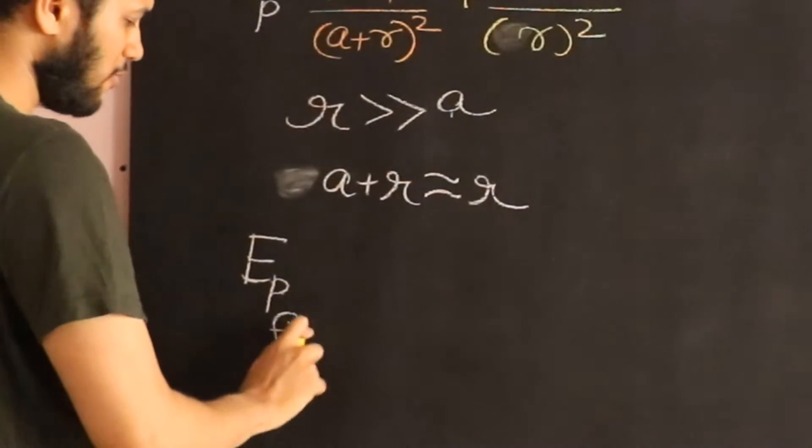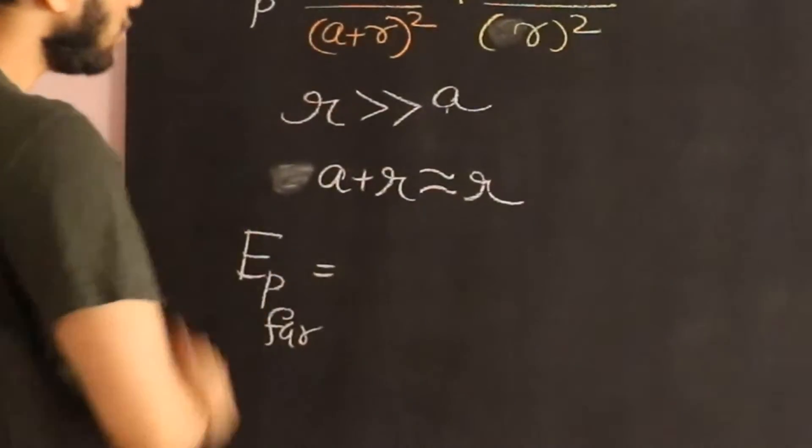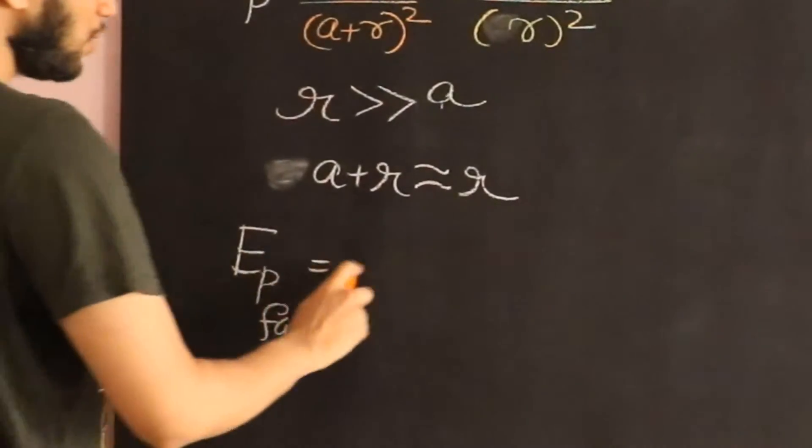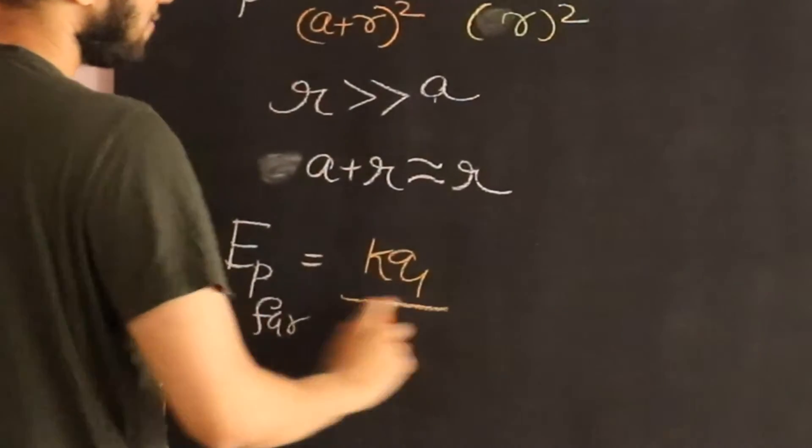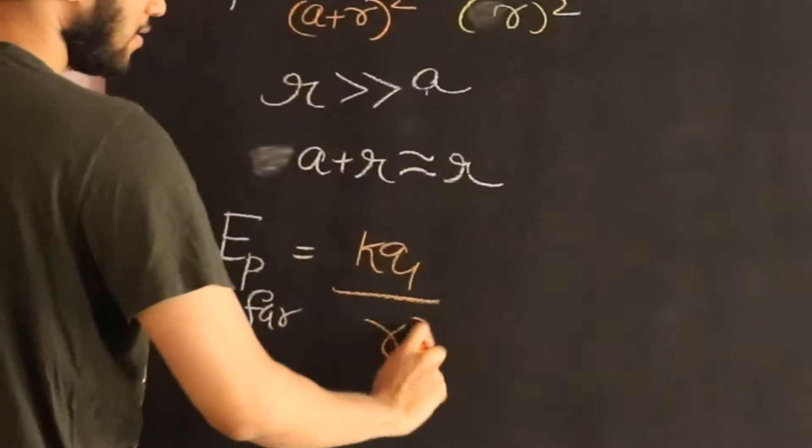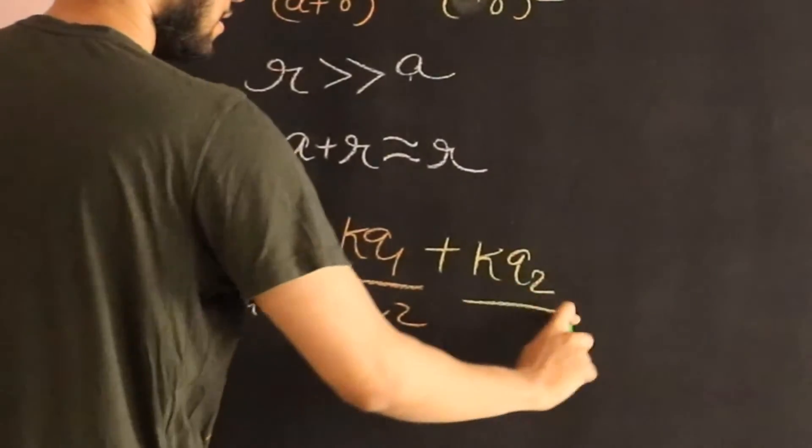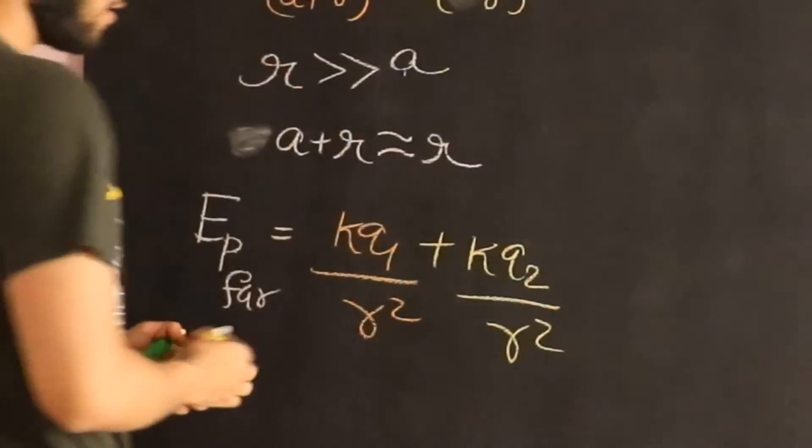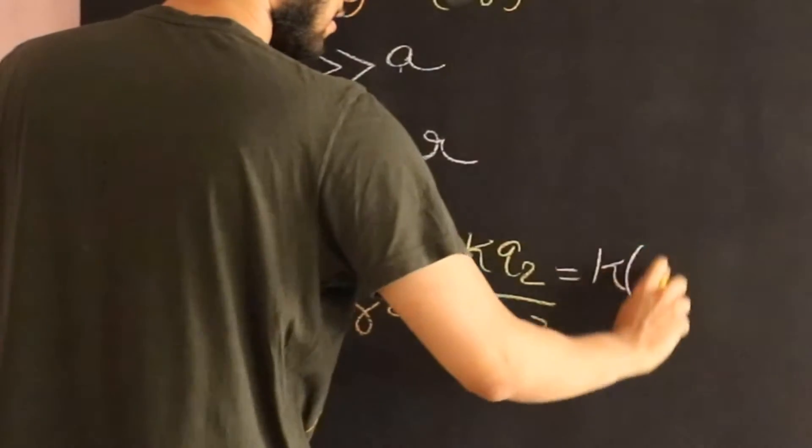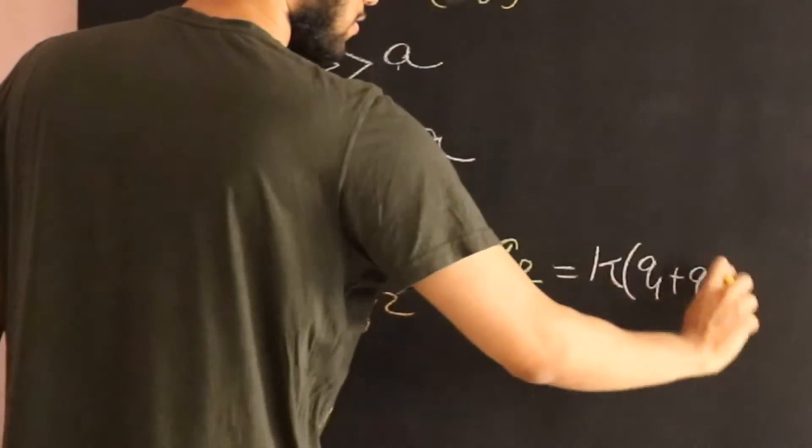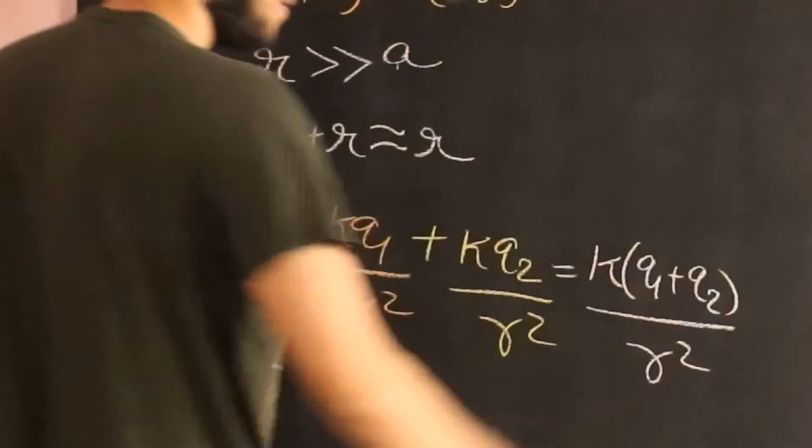You would now get KQ1 divided by R² plus KQ2 divided by R², or in other words you just get K(Q1+Q2) divided by R².